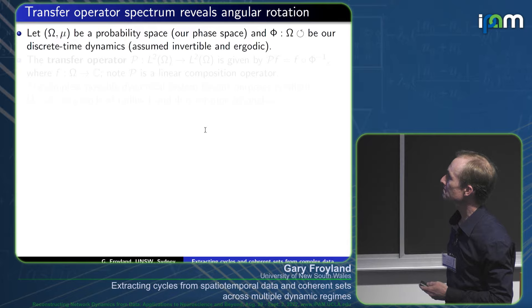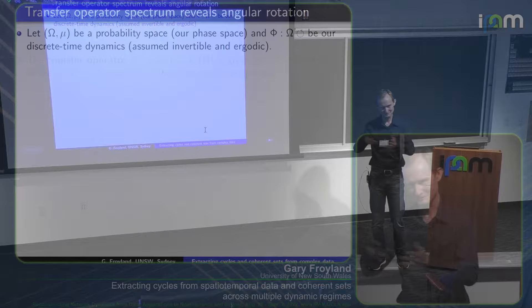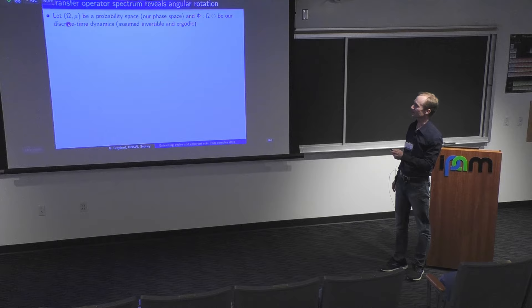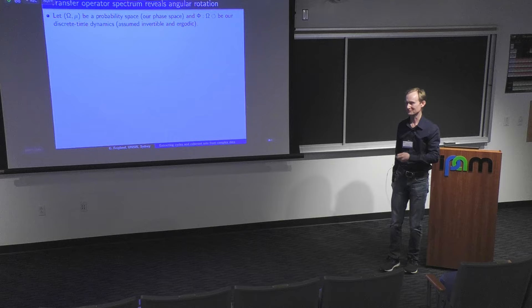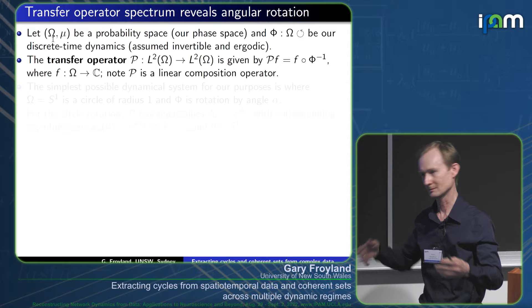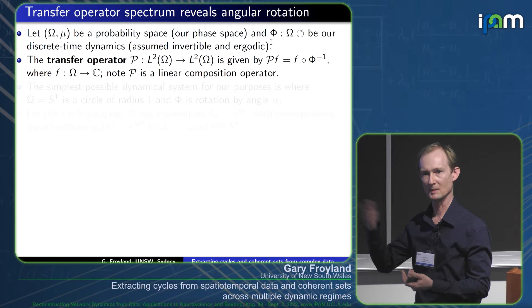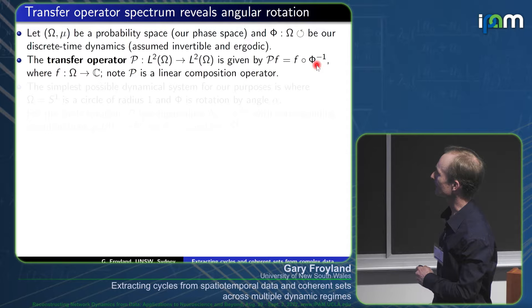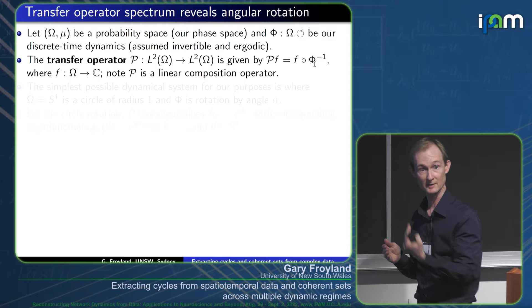The next couple of slides involve some math. My phase space I'll call Ω; μ is an invariant probability measure, and Φ is our dynamical system. In the climate case, Ω is the set of all climate configurations, and Φ might be a monthly update. From this I'm going to build a transfer operator — composing a complex-valued function f with the inverse of our dynamics. It's just the natural push-forward under the dynamics of a complex-valued function. It's linear and a composition operator.